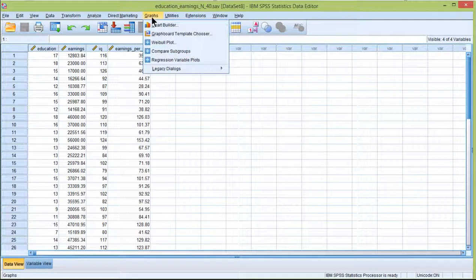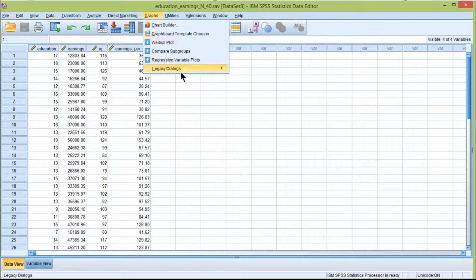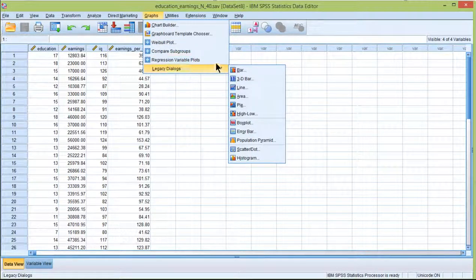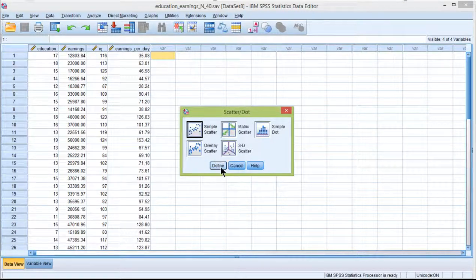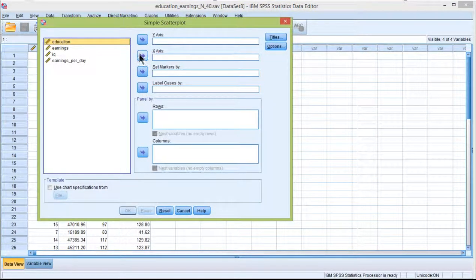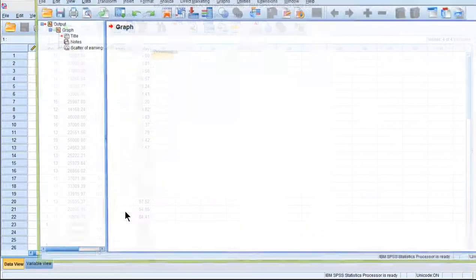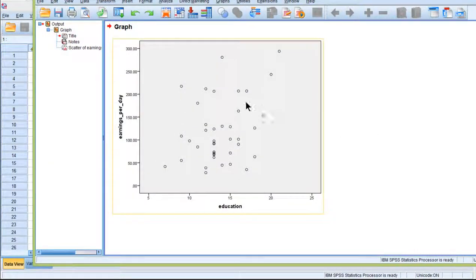So let me make a scatter plot with this education and earnings per day dataset. Go into Graphs, Legacy Dialogues, and Scatter Dot, Simple Scatter, Define. And education's the predictive variable, so it goes on the x-axis. Earnings per day onto the y-axis, that's the variable I'm trying to predict. Click OK. And here is the scatter plot.